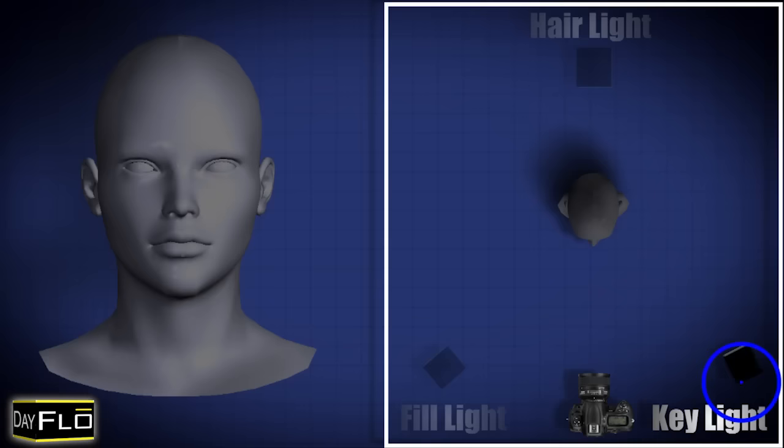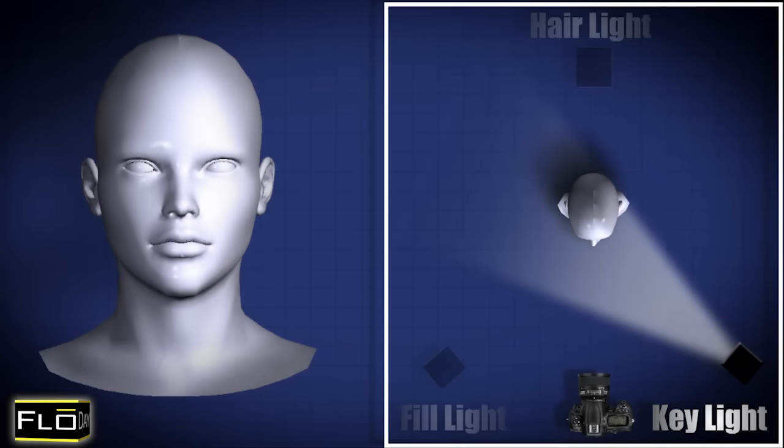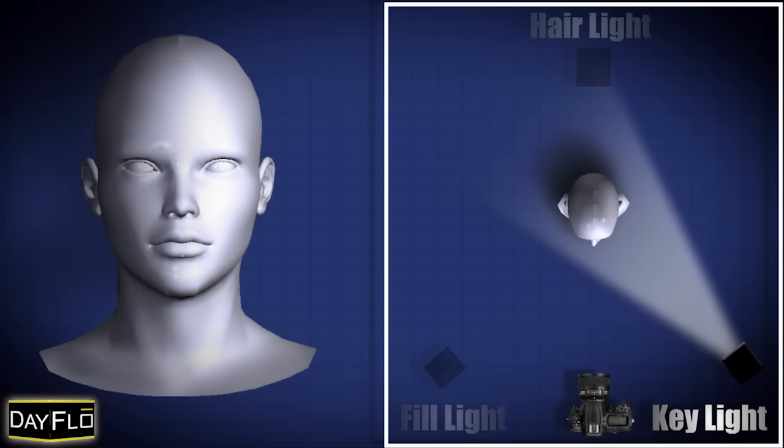Starting with your main or key light, place it on a 15 to 45 degree angle from your camera. If you are using a long lens, set your lights as if you are standing within 10 to 15 feet from your subject. Raise the light higher than the camera level so that the light is coming down on your subject on approximately a 45 degree angle. This light should be your strongest light.